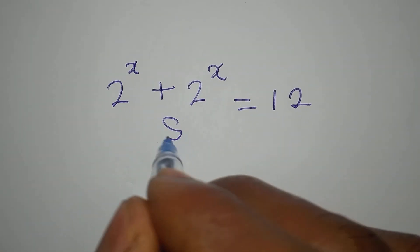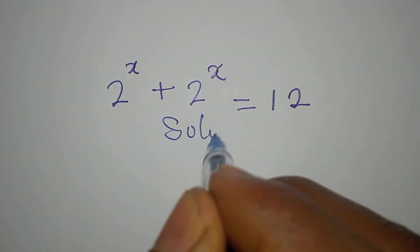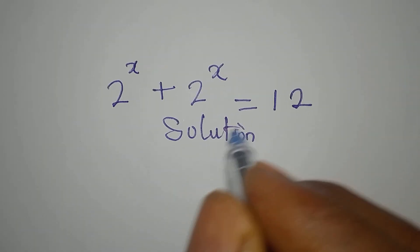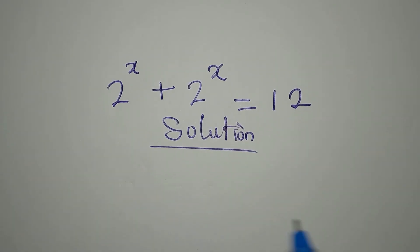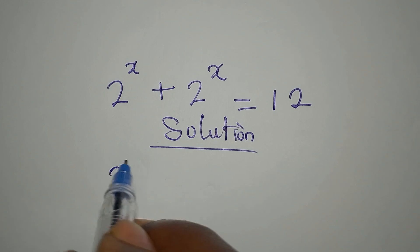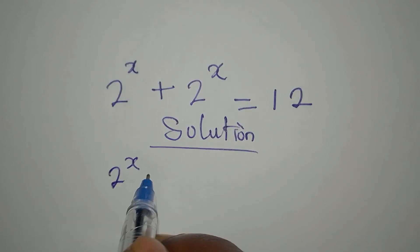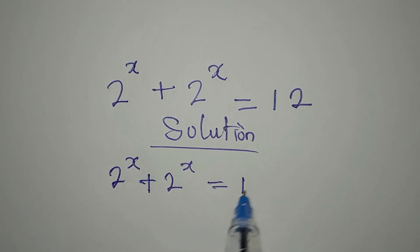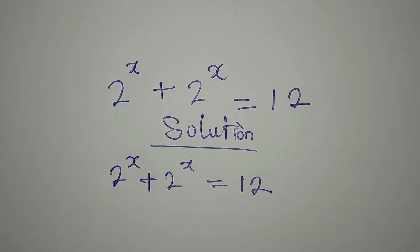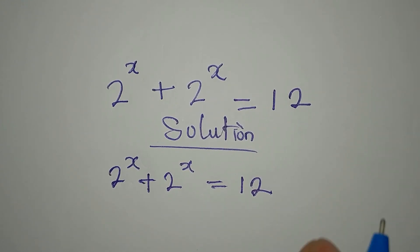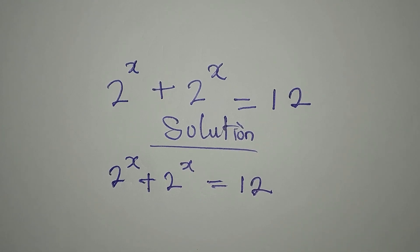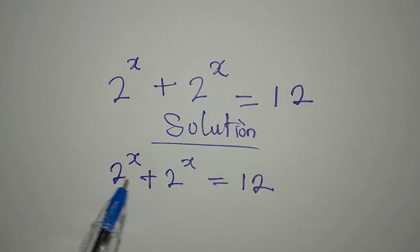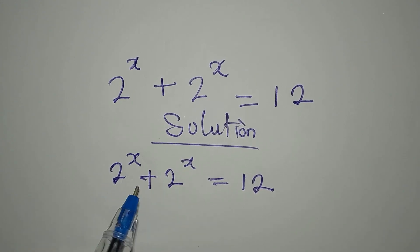Let's provide the solution to this problem. We have 2 to the power of x plus 2 to the power of x equals 12. When you have a problem like this, you think about the first step to take. I can add what I have on the left because they are the same thing.